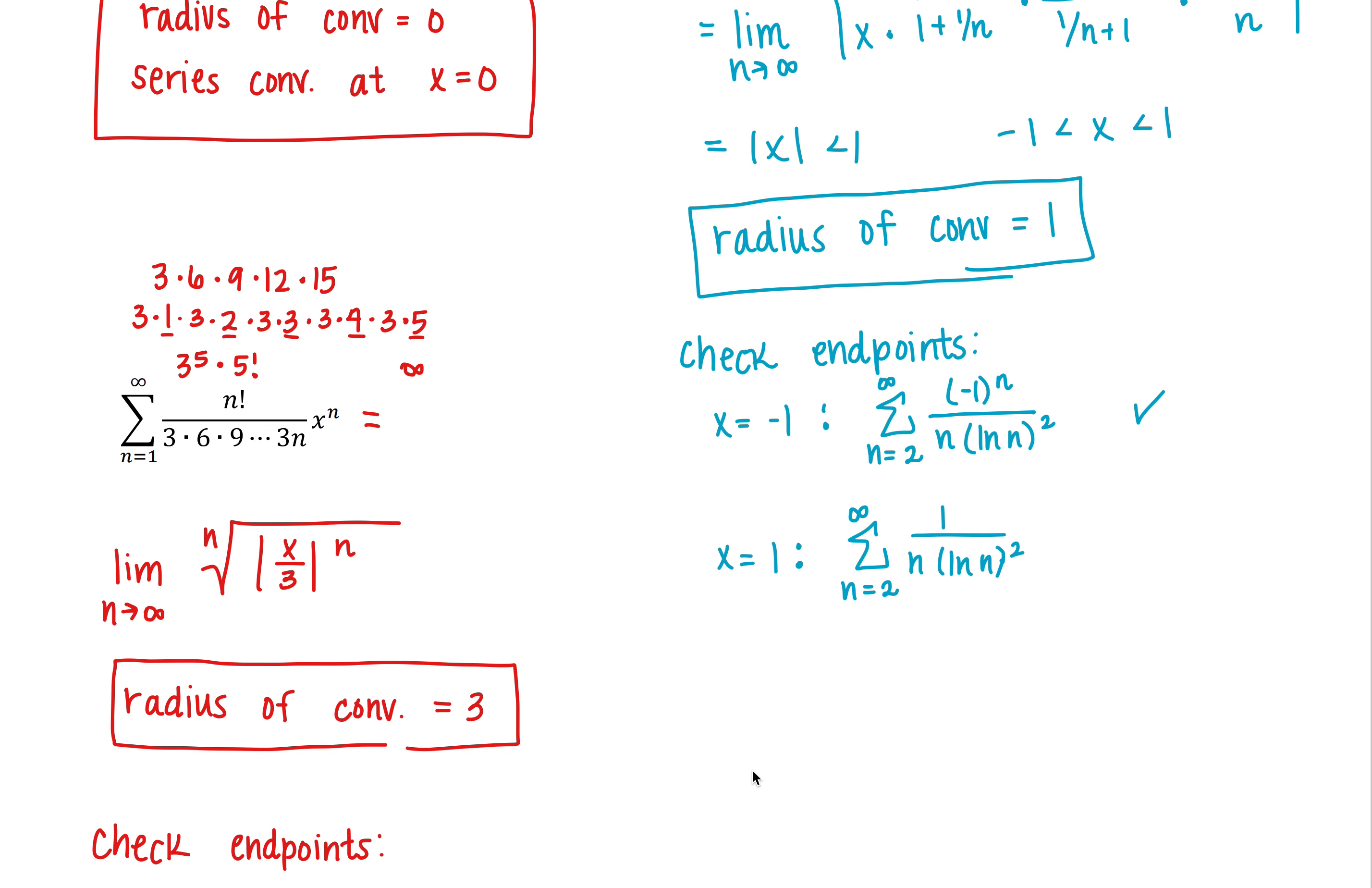And this one actually converges by the integral test. If you were to, and I'm not going to go through every single step, but if I were to look at the integral, so if we looked at the limit as b approaches infinity of 2 to b, we'd have 1 over x times the natural log of x squared dx.